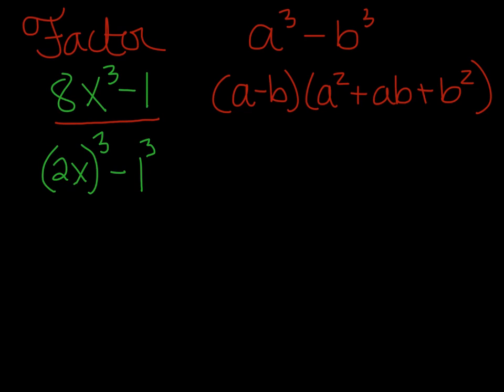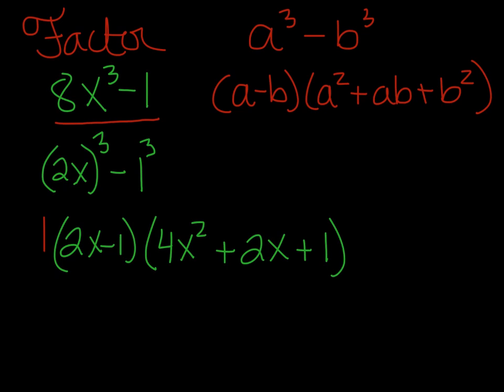So, when we factor that a minus b, we've got 2x minus 1. And then we have a squared. So, we're going to square 2x. We get 4x squared. Make sure you square both pieces. Plus ab, so plus 2x times 1 is plus 2x. Plus b squared, so plus 1 squared plus 1. And there, we're done. Because once you've used the formula, it's not factorable any further.